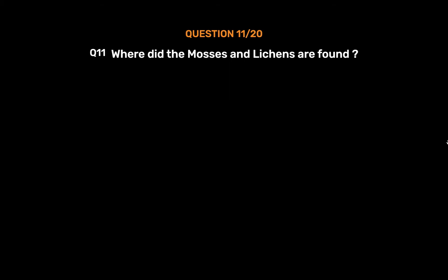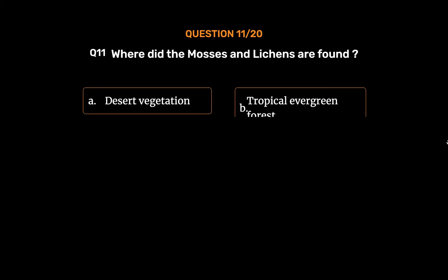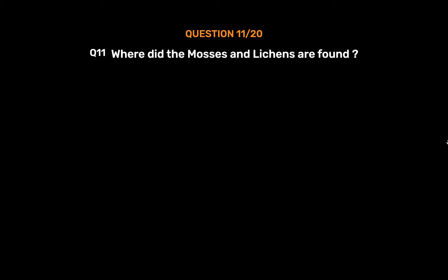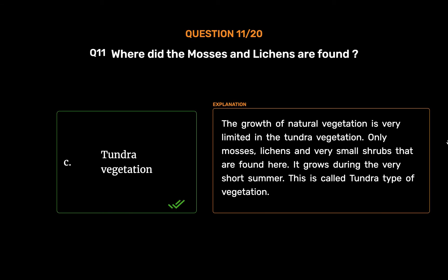Question number 11: Where are mosses and lichens found? Option A: Desert vegetation. Option B: Tropical evergreen forest. Option C: Tundra vegetation. Option D: None of these. The correct answer is Option C: Tundra vegetation. The growth of natural vegetation is very limited in the tundra. Only mosses, lichens, and very small shrubs are found here. They grow during the very short summer — this is called tundra type of vegetation.